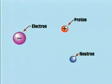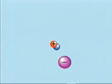The proton and neutron form the nucleus, or center of the atom, and the electron orbits around the nucleus.